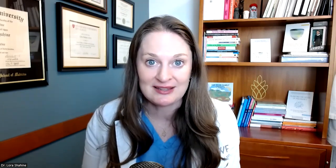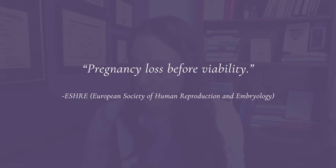The American College of Obstetrics and Gynecologists defines it slightly differently — they define miscarriage as the loss of a pregnancy less than 20 weeks gestation. The European Society of Human Reproduction and Embryology, sort of the European counterpart of ASRM, defines miscarriage as pregnancy loss before viability — a simple but slightly vague definition. Viability is the ability of a fetus or baby to survive after delivery, kind of on its own, and that does change over time with technology and understanding.